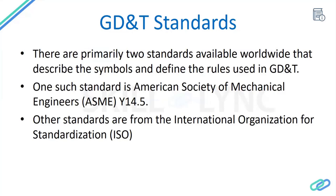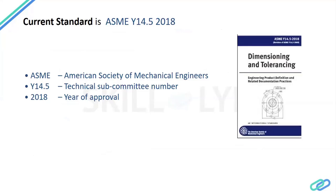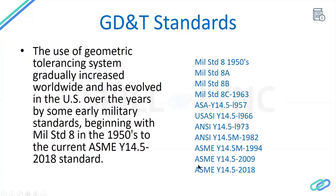It all started with World War II for military purposes, and that is where the standard initiated. It evolved through time — starting from Military Standard 8 in the 1950s, through ANSI (American National Standards Institute) standards, and now the American Society of Mechanical Engineers standard. The most recent standard is ASME Y14.5-2018, where Y14.5 refers to the technical subcommittee and 2018 is the year of approval. Prior to this, the 2009 standard was widely used, but industries are now updating to the new release.